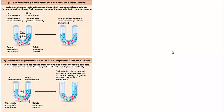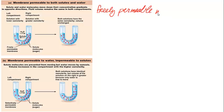Before we discuss the next figure, we need to talk about a couple of different types of membranes. At the top in letter A we have a freely permeable membrane — a membrane that allows basically anything to pass through from one cell to another. This is not what we have in our body; this is not in our cells.